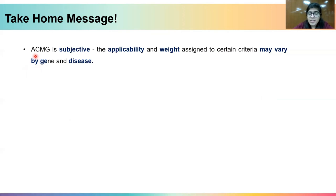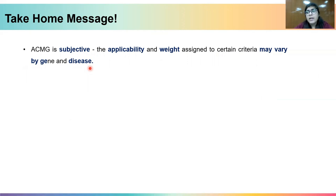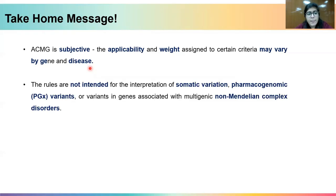The first very important take-home message is that ACMG is subjective, meaning the applicability and weight assigned to each criterion may hugely vary by gene and disease. It is very important that you define your disease area and get complete information about the genes associated with that disease — including what inheritance pattern they follow, their general role in physiological processes, and so on — because your ACMG attribute assignments will depend on all of these factors. That's why we say it depends on a case-by-case basis. Also, the ACMG rules are not intended for interpretation of somatic variations, pharmacogenomic variations, or variants in genes associated with multigenic non-Mendelian complex disorders.